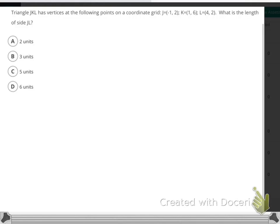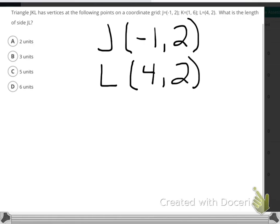To find the side length of side JL, first we need to determine the points of J and L. J is at (-1, 2) according to the question, and L is at (4, 2) according to the question.